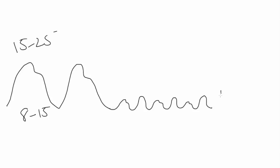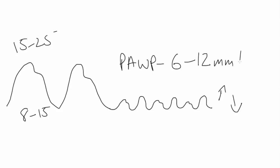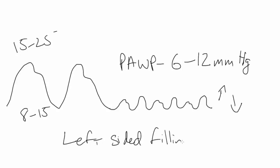The wedge waveform will have some respiratory variation up and down, but it gives you an estimate of the left atrial pressure. The pulmonary artery wedge pressure we're looking for is something on the order of 6 to 12 millimeters of mercury. Also know that the wedge pressure can be thought of as the left-sided filling pressure. When we talk about left and right-sided filling pressures, the pulmonary artery wedge pressure is the left-sided filling pressure, whereas the right atrial pressure or the CVP would be the right-sided filling pressure.